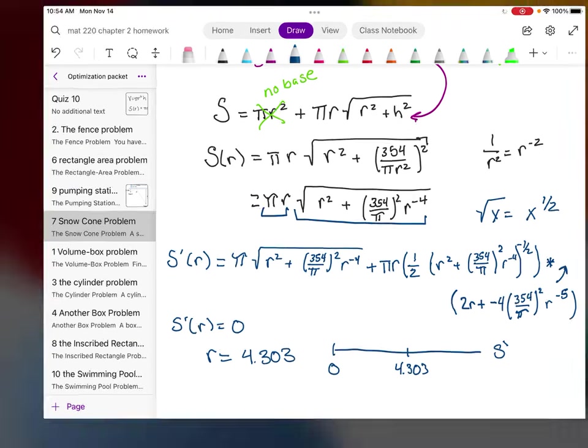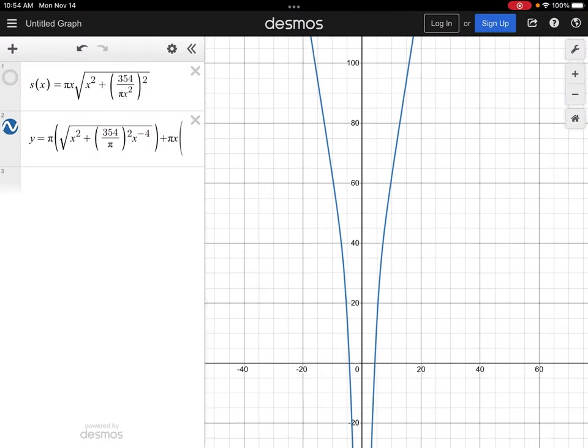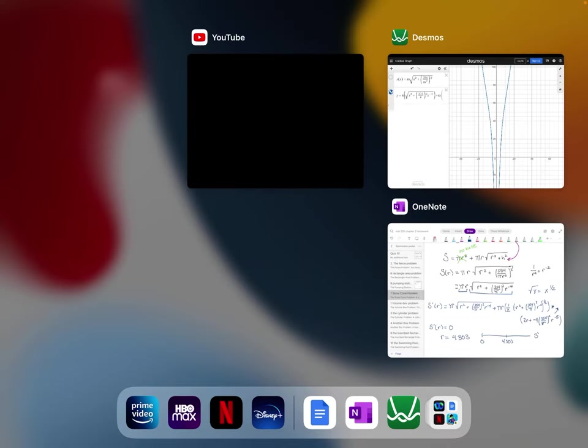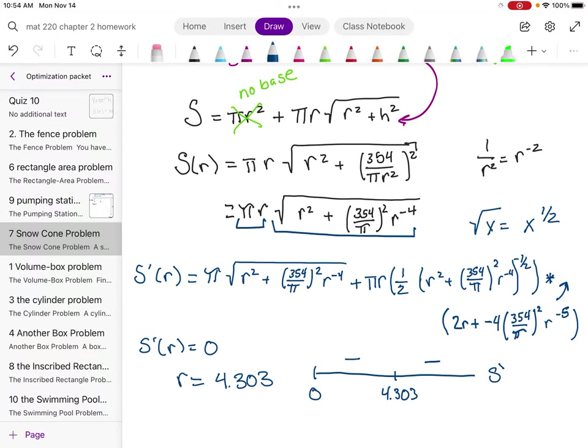And if I go back and look at this graph, notice that before 4.3, my derivative is negative, and afterwards it's positive. And so my derivative is going from negative to positive, which means my function is going from decreasing to increasing, therefore has a minimum value of 4.303.